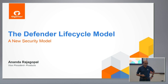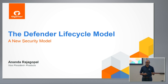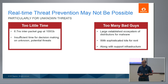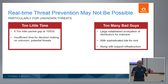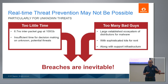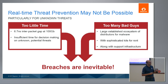Let's start with the Defender Lifecycle Model. A quick recap for those not at NFD 15, where I walked through the GigaSecure security delivery platform. This is a platform we introduced about three years back. Today there is very little time to actually take actions in real time from a threat prevention perspective, especially as networks get upgraded to 40 gigabit and 100 gigabit Ethernet. There's just about 6.7 nanoseconds of time between two consecutive packets on a 100 gigabit Ethernet link — not enough time to be taking actions in real time. Combined with the fact that hundreds of millions of variants of malware are created every year, the consequence is that breaches are inevitable.